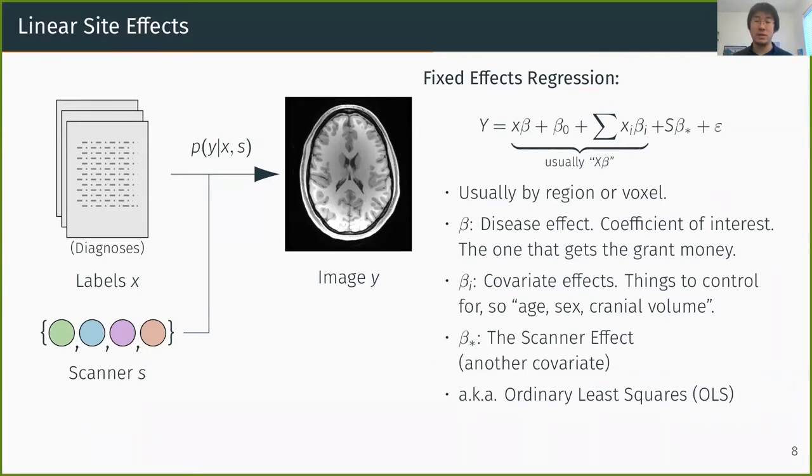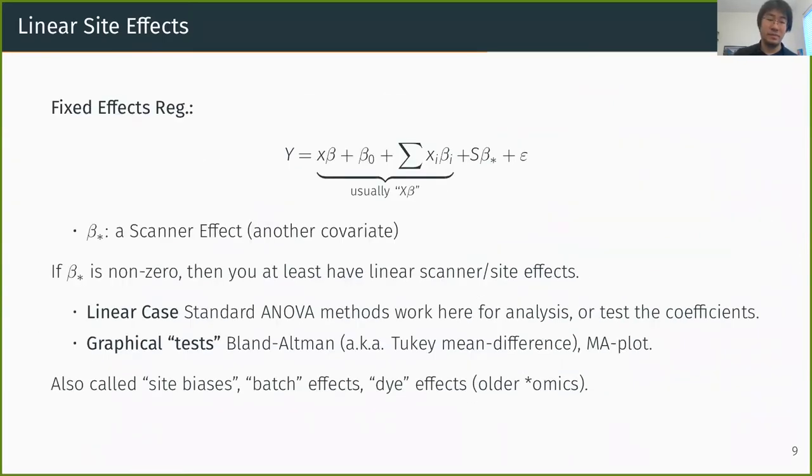And beta star is the scanner effect. We'll fit these all using ordinary least squares. So, again, beta star being the scanner effect. If beta star is non-zero, or essentially if we have a detectable effect by which scanner we're on in the linear sense, then we have linear scanner or side effects. Standard ANOVA is a great test here, or variations on Mankova, essentially. But also there are graphical tests. These originate mostly from genomics or other omics. But there's Bland-Altman or the MA plot. And both of those can be used to show graphically that there are side effects.